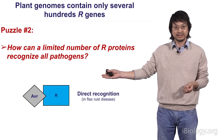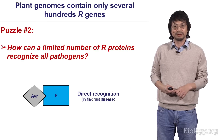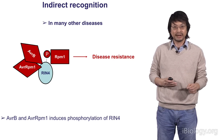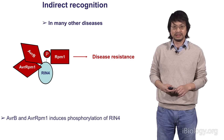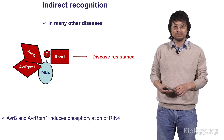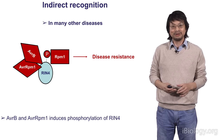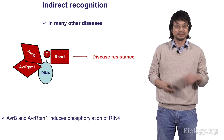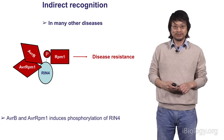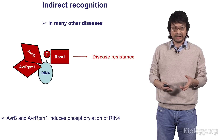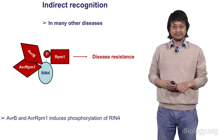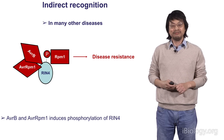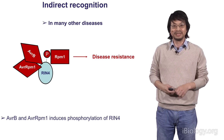This puzzle was partially solved by the realization that there's a lot of so-called indirect recognition by R proteins of AVR proteins. One example: the light blue circle represents a plant protein called RIN4 in Arabidopsis. This protein is attacked by two avirulence proteins, AVRB and AVRPPM1, from Pseudomonas syringae. These two AVR proteins induce the phosphorylation of RIN4. This phosphorylation event, induced by two different AVR proteins, is recognized by RPM1 R proteins. So one R protein recognizes two AVR proteins through this common modification of another plant protein - indirect recognition.